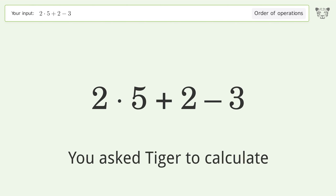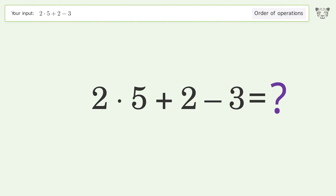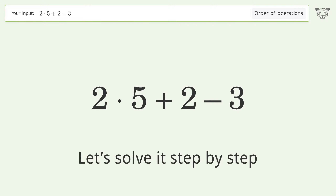You ask [the tool] to calculate. This deals with the order of operations — the final result is 9. Let's solve it step by step.